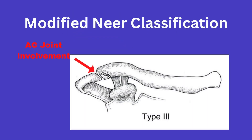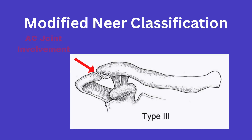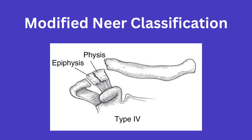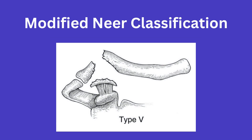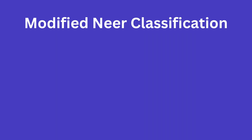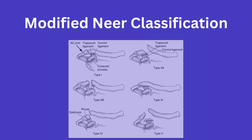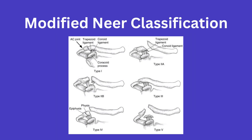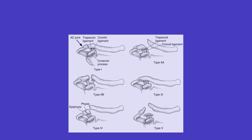Type 3 is a fracture that extends into the acromioclavicular or AC joint and is lateral to the coracoclavicular ligaments. Type 4 is only seen in the pediatric population and involves a physeal fracture. And lastly, Type 5 is a comminuted fracture. Notice the trend: if the fracture is medial to the ligaments or involves the ligaments, it is typically going to be an unstable fracture in the Neer classification.